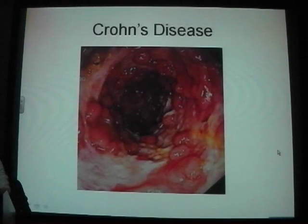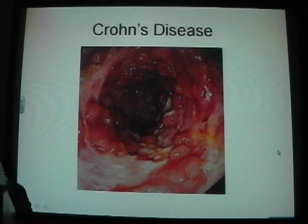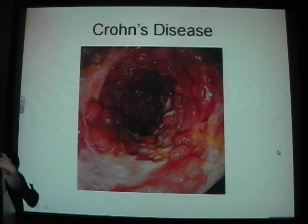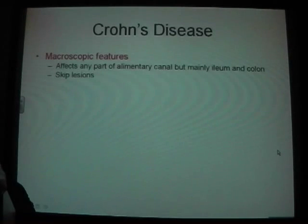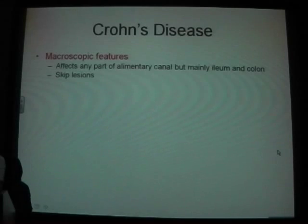Crohn's disease — you have skip lesions. Crohn's typically affects the whole alimentary canal from mouth to anus, but mainly the ileum and colon. It also has extra-intestinal signs like mouth ulcers. Macroscopic features: affects any part of the canal but mainly ileum and colon, with skip lesions visible on endoscopy.